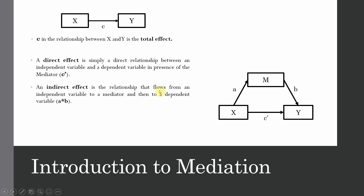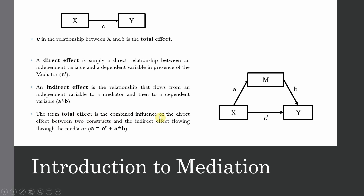An indirect effect is the relationship that flows from an independent variable to a mediator and then to the dependent variable, and is calculated by multiplying A and B. So your indirect effect flows from X to M, which is your mediator, and M to Y, where X to M is represented by A and M to Y is represented by B. The total effect is the combined effect — that is, your direct effect (C-complement) plus your indirect effect (A × B).